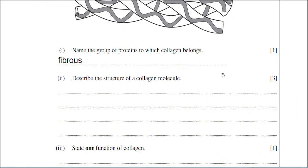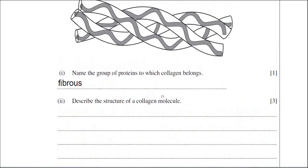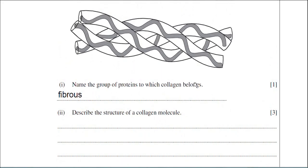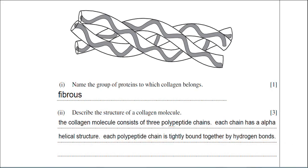Describing the structure of the collagen molecule: you've got three polypeptide chains. The polypeptide chains are in the alpha helix structure. The three chains are tightly bonded together by hydrogen bonds. So my answer is: the collagen molecule consists of three polypeptide chains; each chain has an alpha helix structure; and each polypeptide chain is tightly bound together by hydrogen bonds. That should get you the three marks.